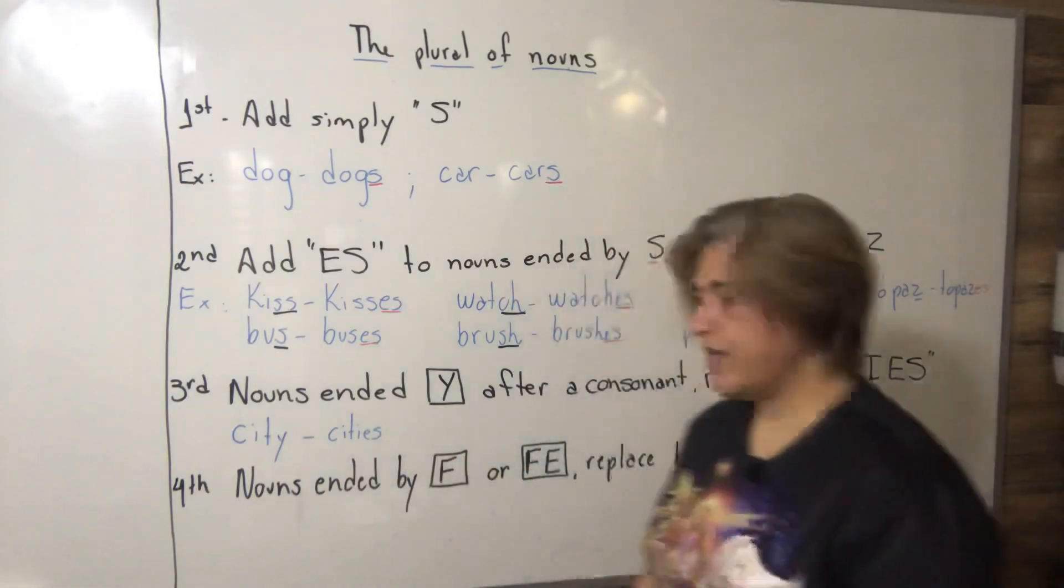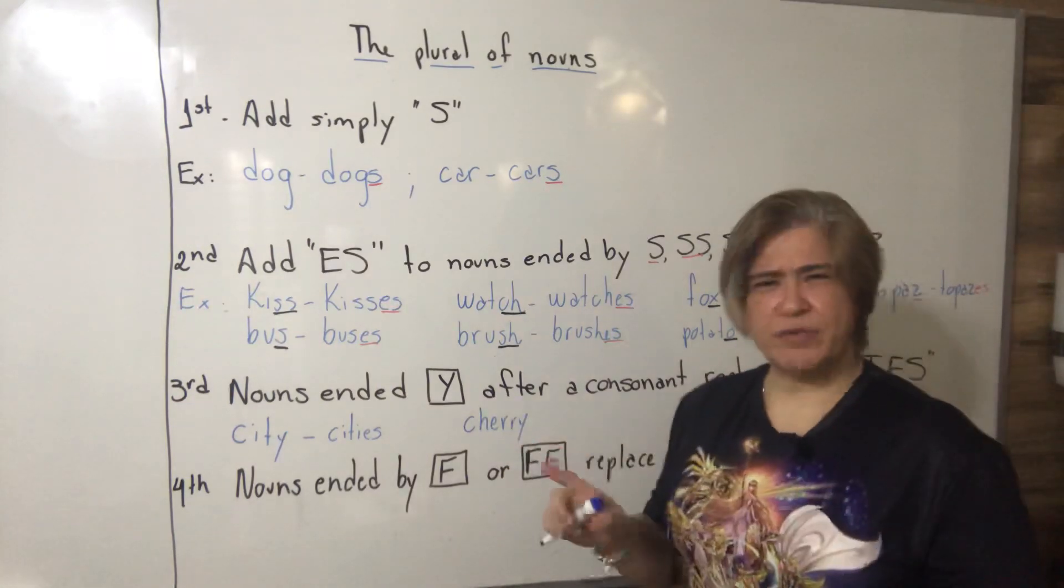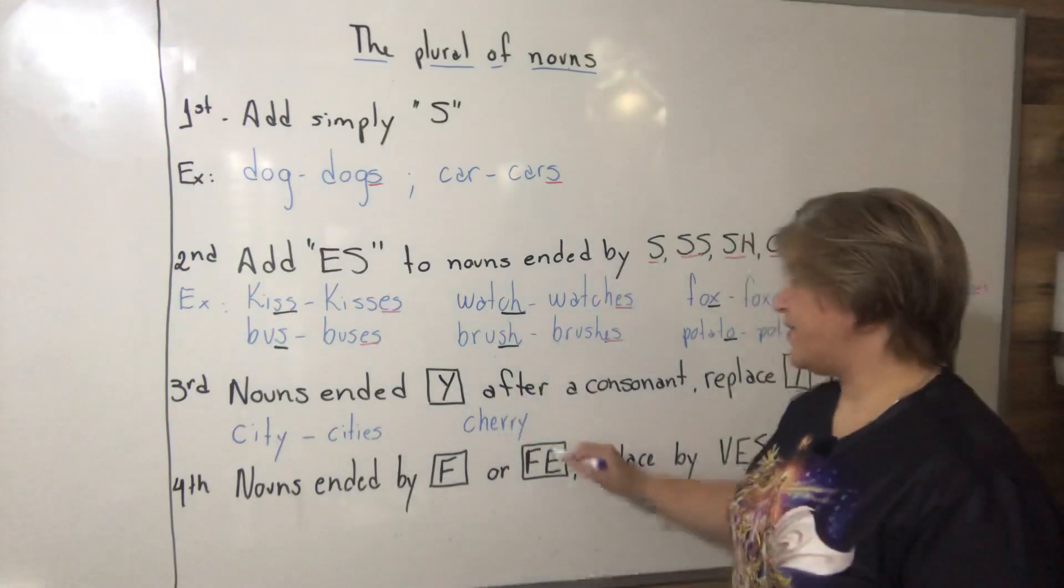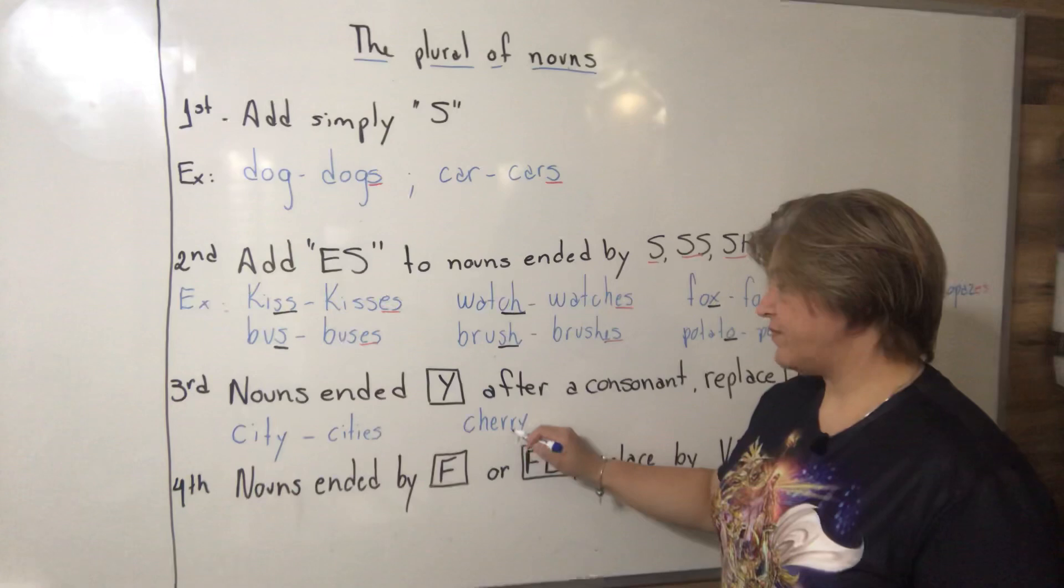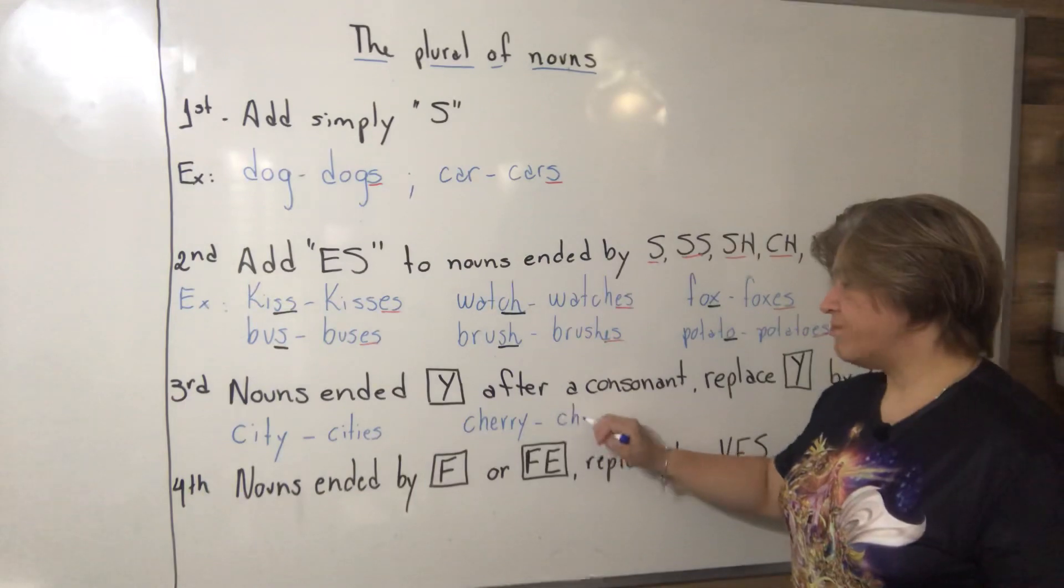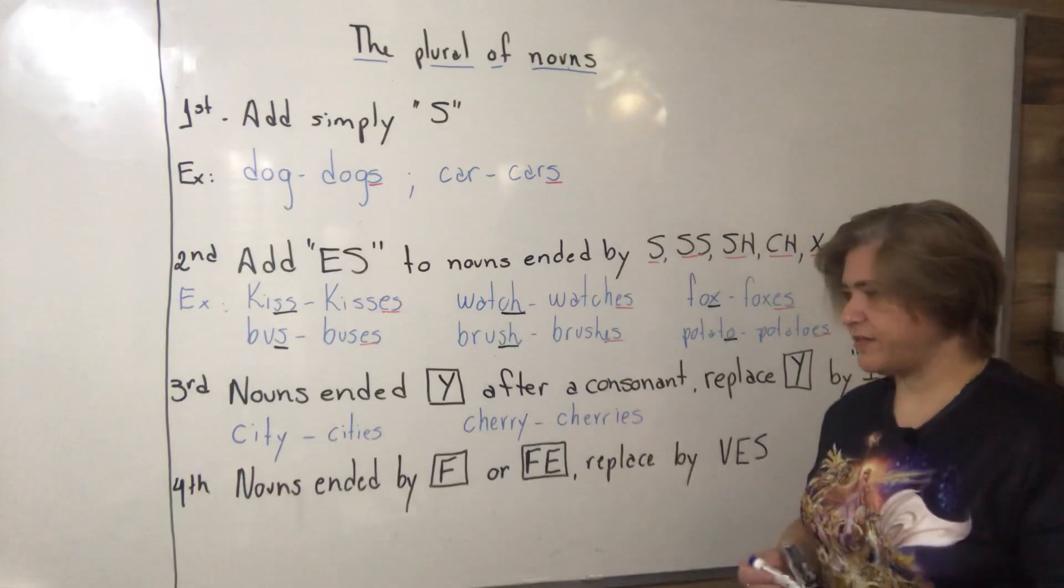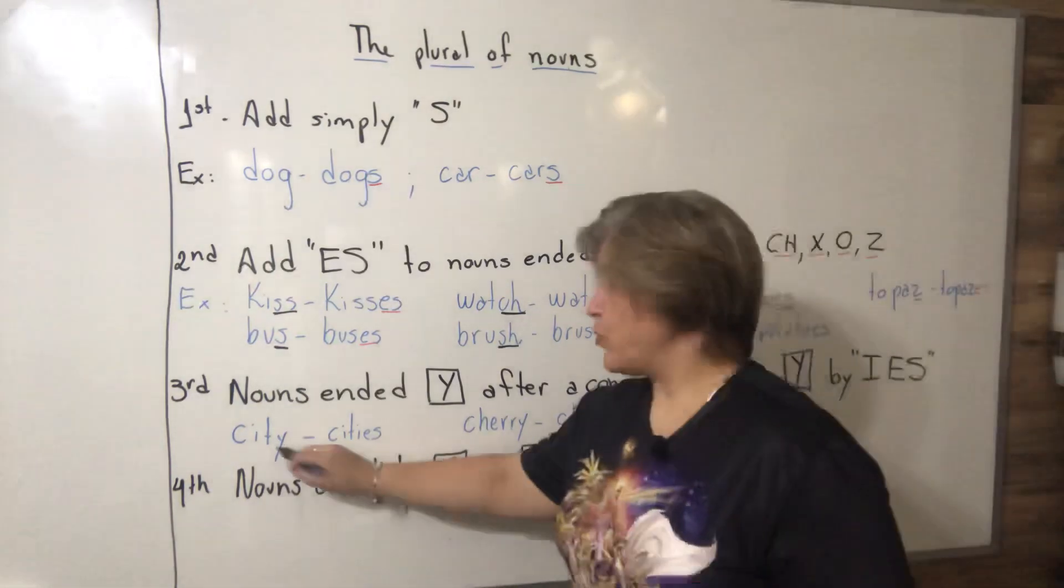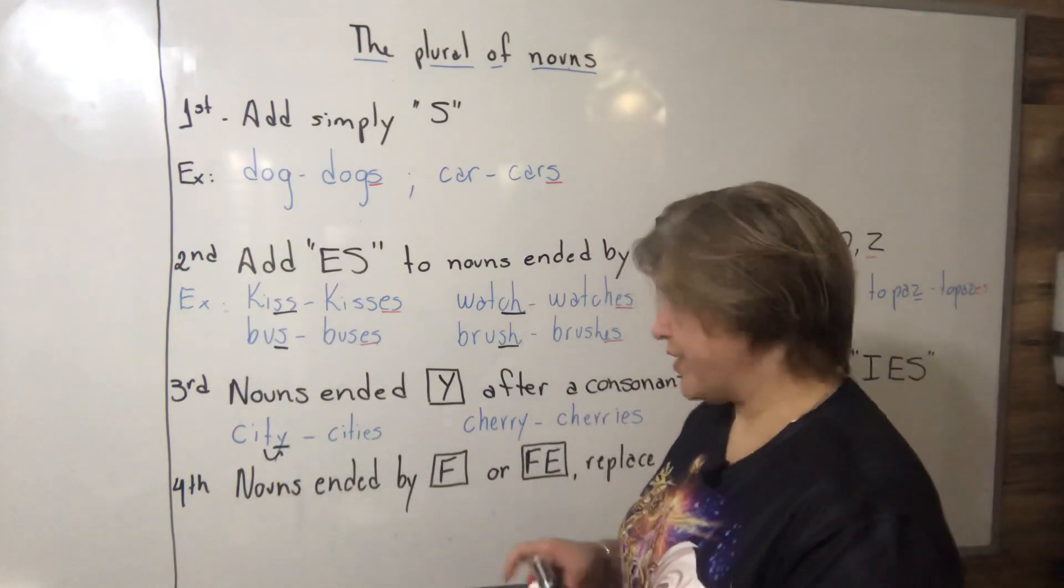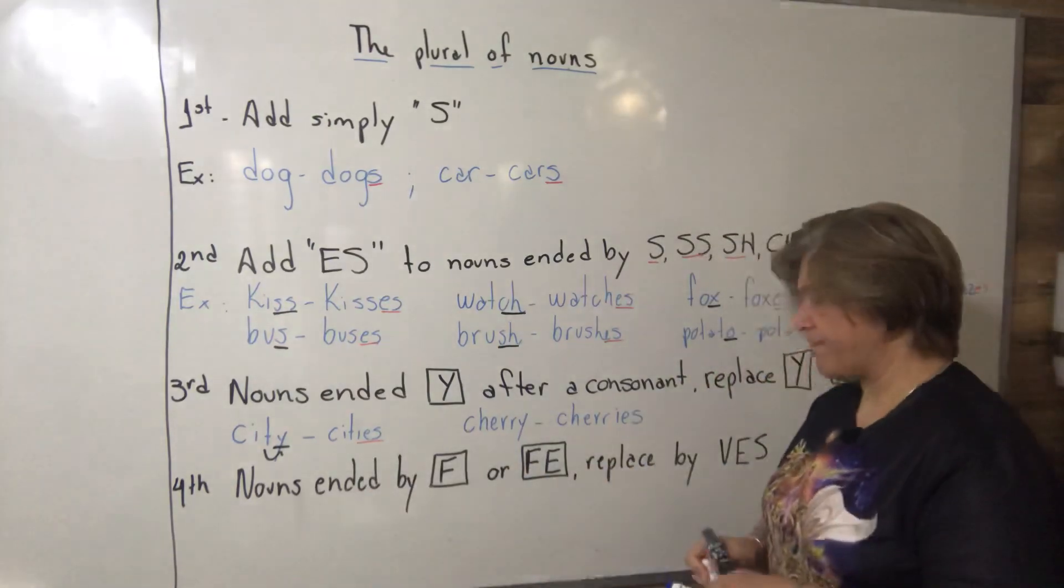Another possibility, we have cherry. Remember, cherry is the little fruit cereja. It finishes in Y after a consonant, so replace Y by IES. Every time we have Y after a consonant, we are going to add IES, substituting the Y.